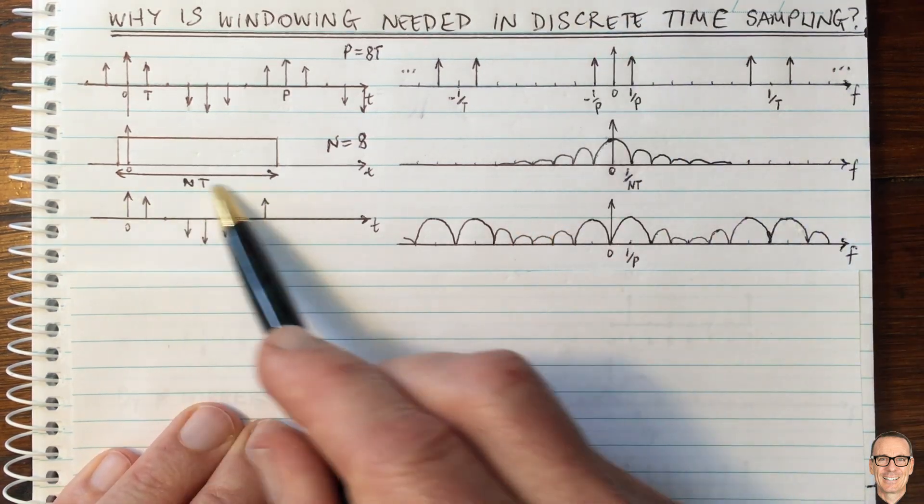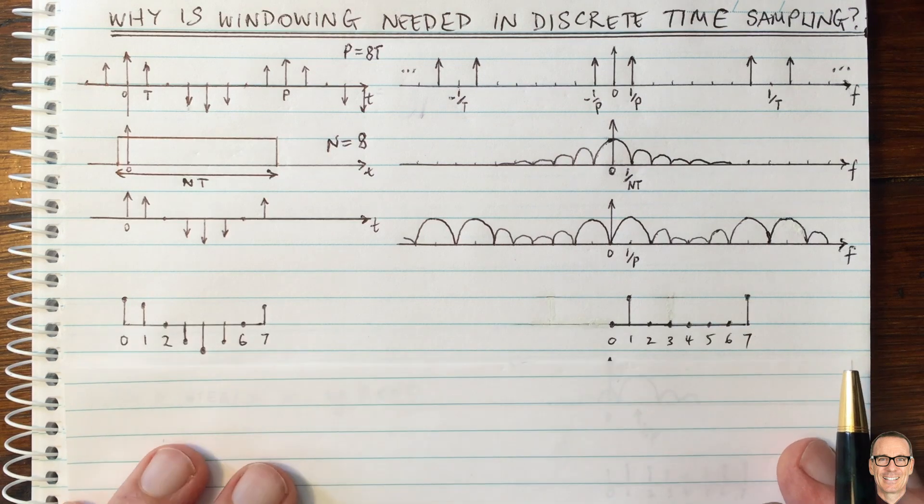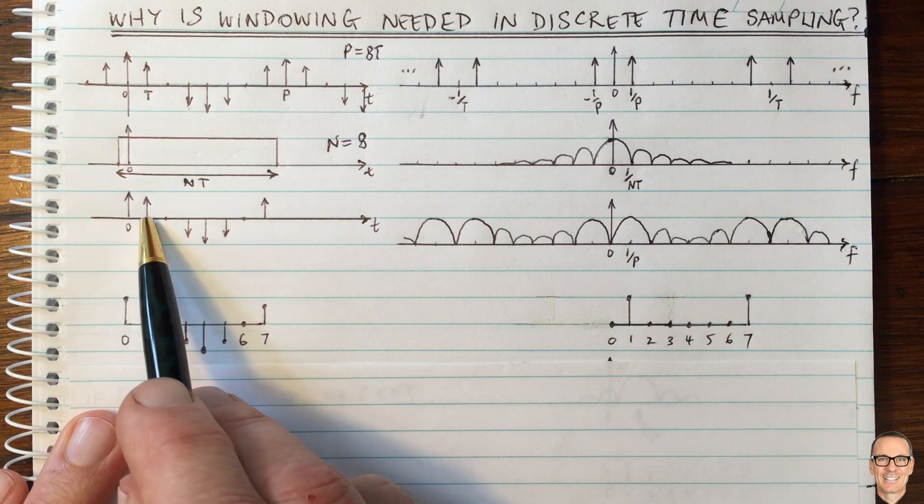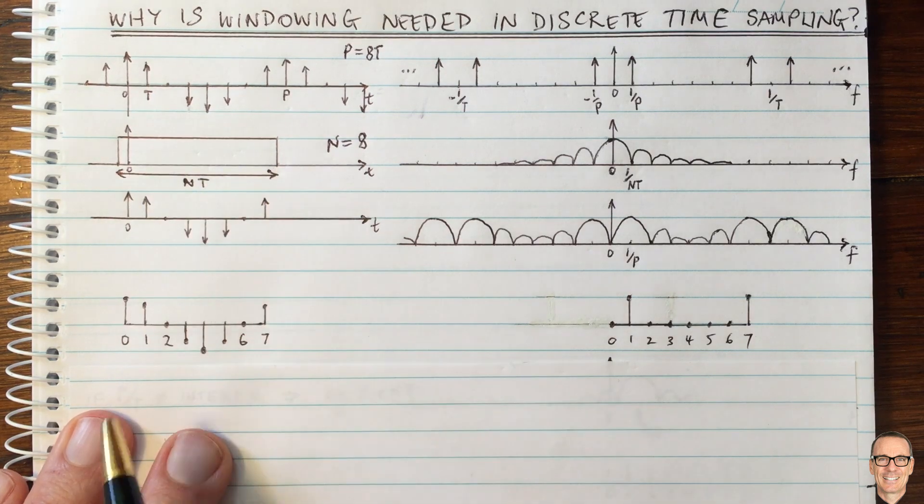When we take this sampled waveform in continuous time and represent it in discrete time, the only thing we take are the values that are within this window.